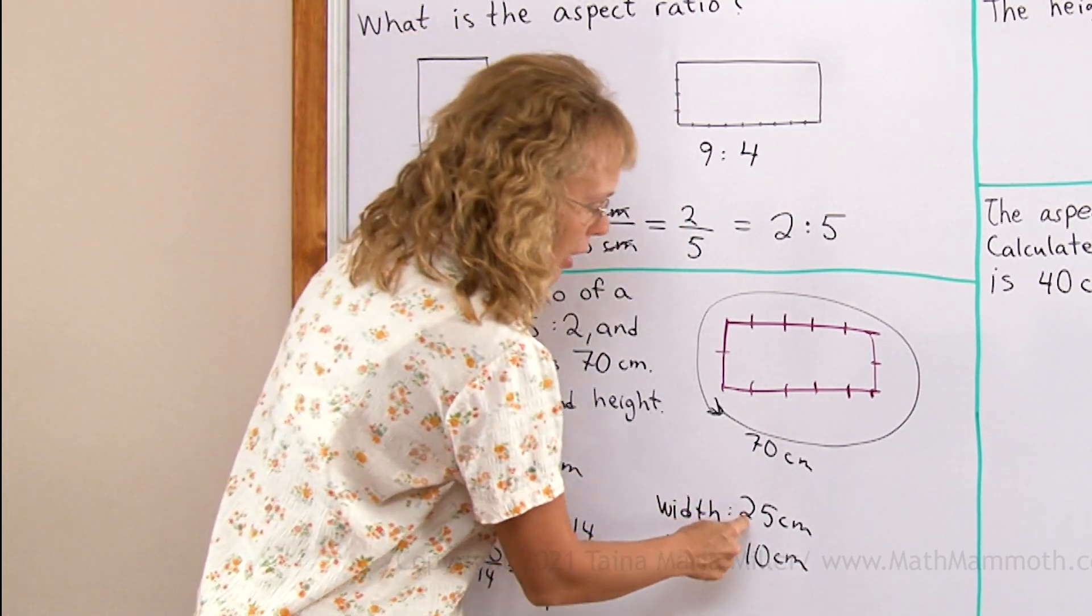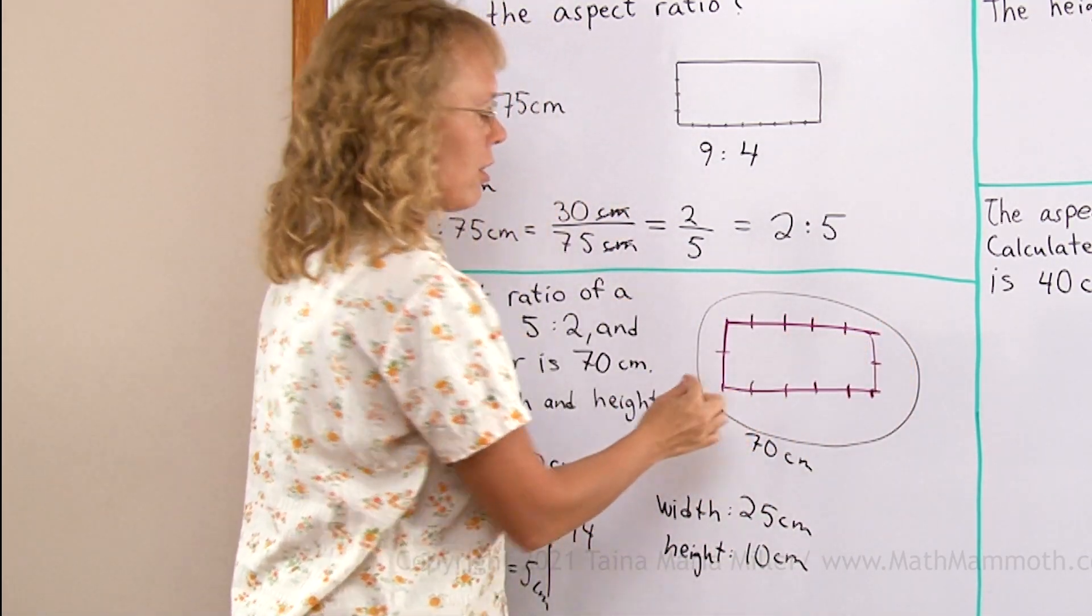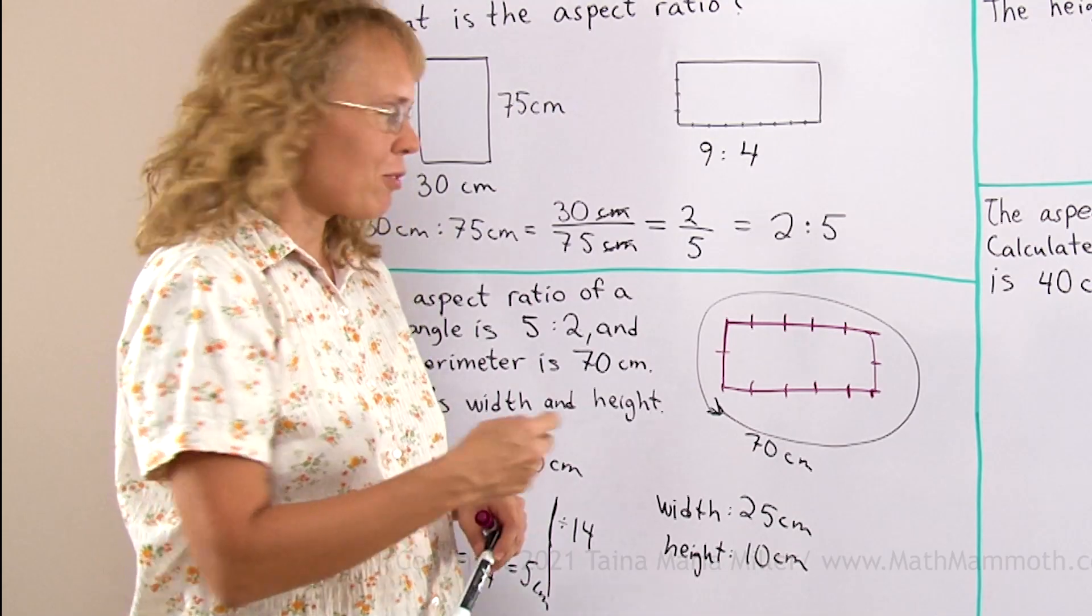And now let's just check real quick. 25 plus 10 is 35 centimeters and another 35. Yes, that is 70 centimeters for the perimeter.